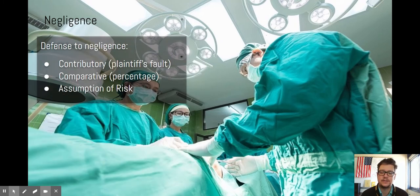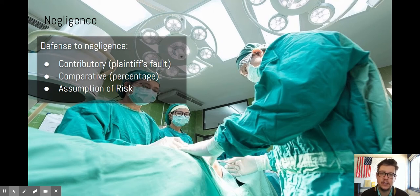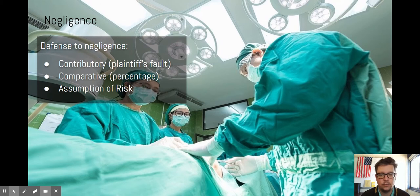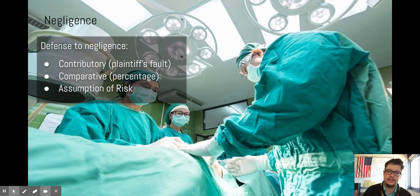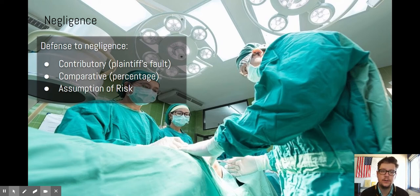The defenses to negligence are also very tricky. Contributory — that's where the defendant says the plaintiff is more at fault than they are, meaning the plaintiff contributed more than 50% to their injuries. That's the best defense; if the plaintiff is only 20% at fault, the defendant wins. Comparative is a less strong argument — the defendant admits they're at fault, but not 100%. They might be 80%, 70%, or 60% at fault, which will reduce the damages awarded.